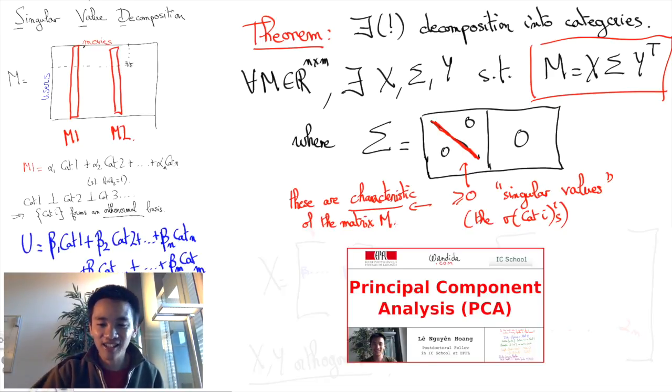But then, just like for PCA, we may eventually neglect the user and movie categories that are associated with negligible singular values. By pruning our category list,